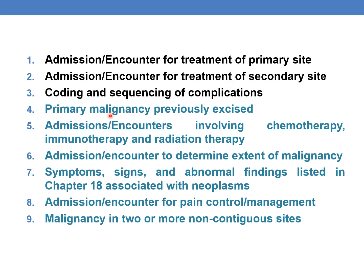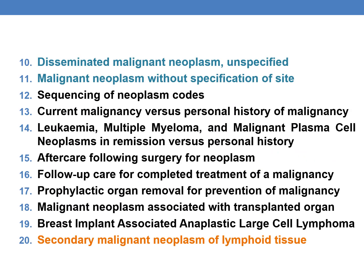In the current session, we will be focusing on: primary malignancy previously excised; admissions and encounters involving chemotherapy, immunotherapy, and radiation therapy; admissions or encounters to determine the extent of malignancy; signs, symptoms, and abnormal findings listed in Chapter 18 associated with neoplasm; admission or encounter for pain control or management; malignancy in two or more non-contiguous sites; disseminated malignant neoplasm unspecified; and malignant neoplasm without specification of site. Through point 11 we will discuss here, and the rest in Part 3. A new guideline — secondary malignant neoplasm of lymphoid tissue — will be discussed in the next part.